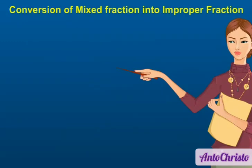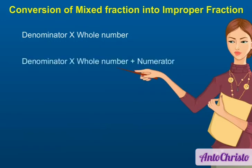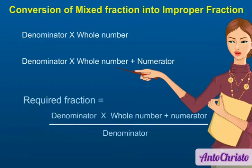Now let us learn to convert a mixed fraction into an improper fraction. Step 1: Multiply the denominator of the proper fraction with the whole number. Step 2: Add the numerator of the proper fraction to the number obtained in Step 1. Step 3: The result from Step 2 becomes the numerator of the improper fraction, and the denominator of the proper fraction becomes the denominator of the improper fraction.